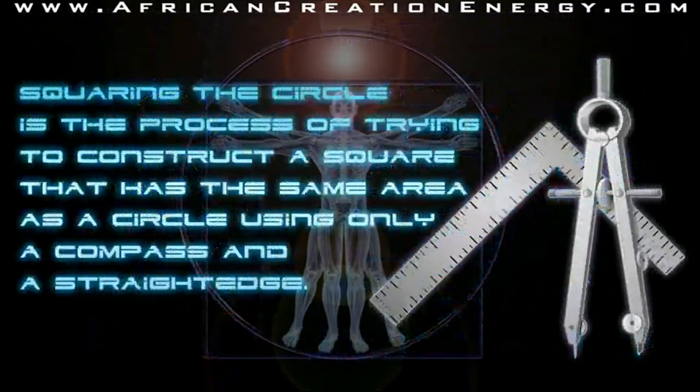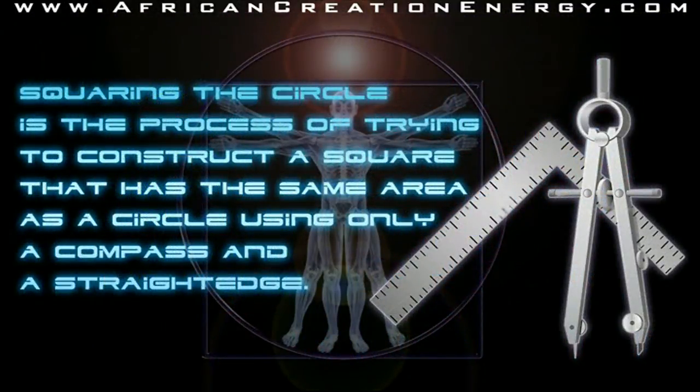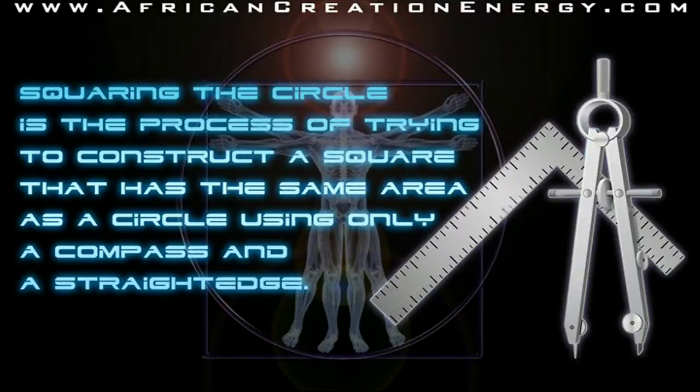Now squaring a circle is an ancient geometric problem that involves trying to construct a square that had the same area as a circle using only a compass and a straight edge.